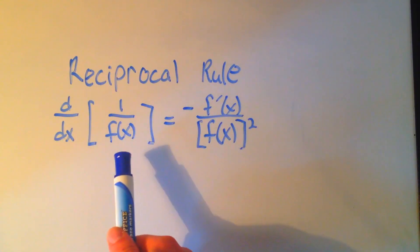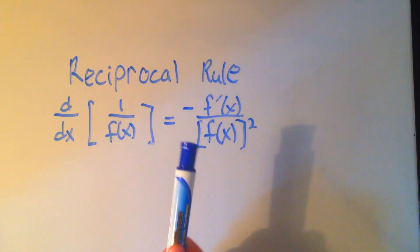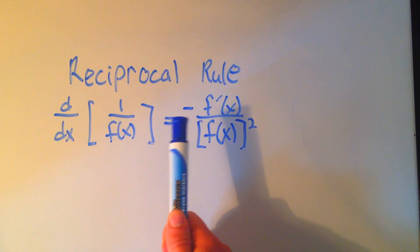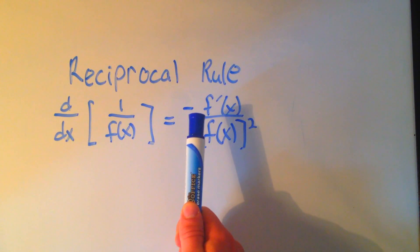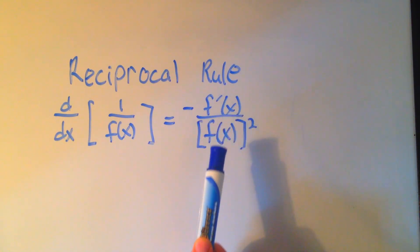If you want to take the derivative of 1 over some function, you write a negative sign, you put the derivative of the function itself on the top, and the original function on the bottom squared.